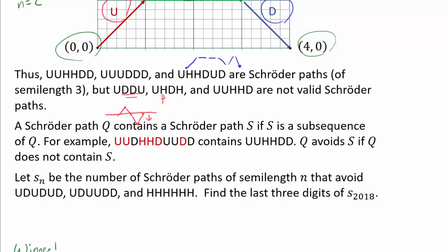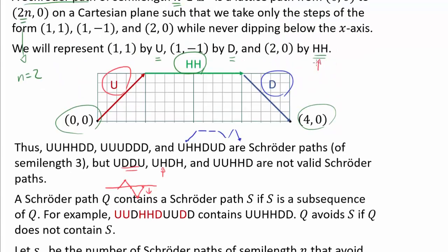UHDH, well, we can only have HH whenever we have H. It has to occur in a pair. And UUHHD, well, we are not going all the way back down in this case. You want to go all the way back down to the x-axis.